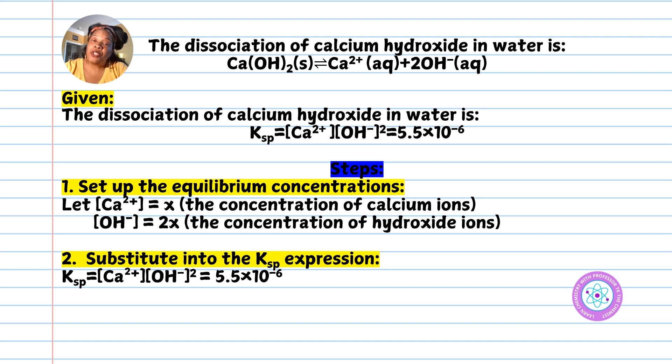In step two, substitute these variables into the Ksp expression. Ksp = [Ca²⁺][OH⁻]² = x(2x)². That equals 5.5×10⁻⁶.